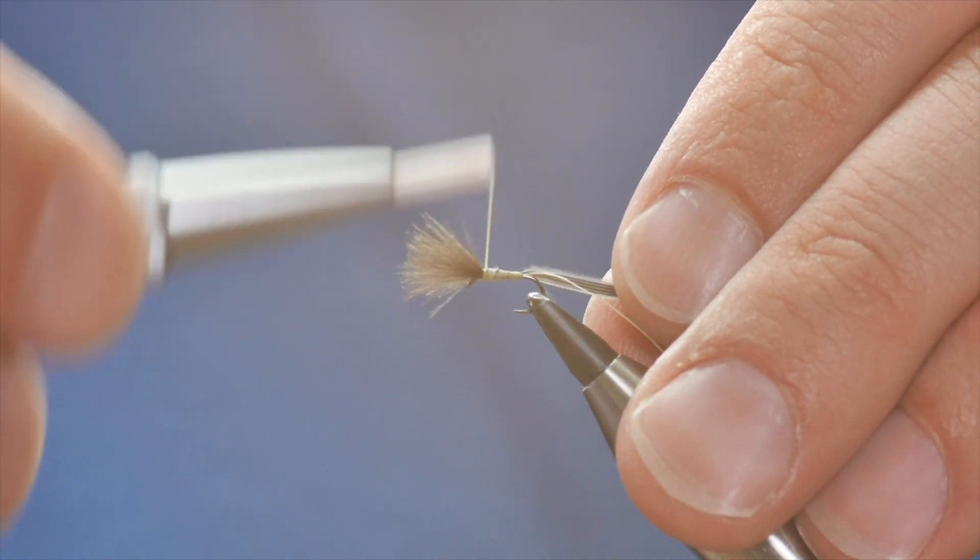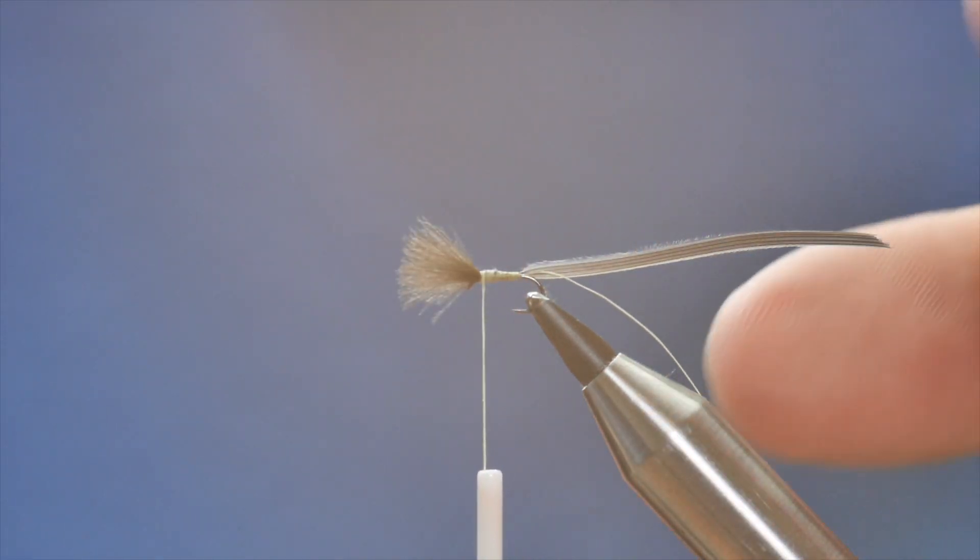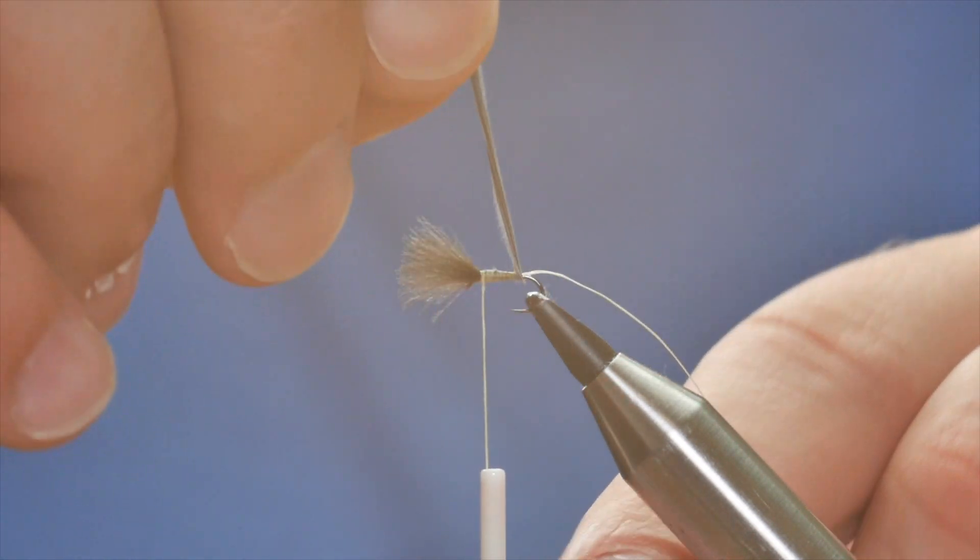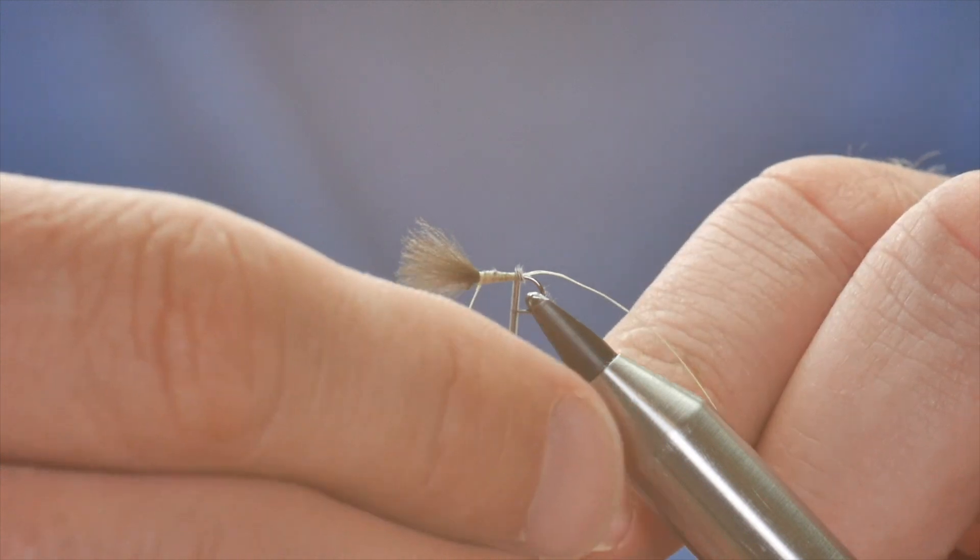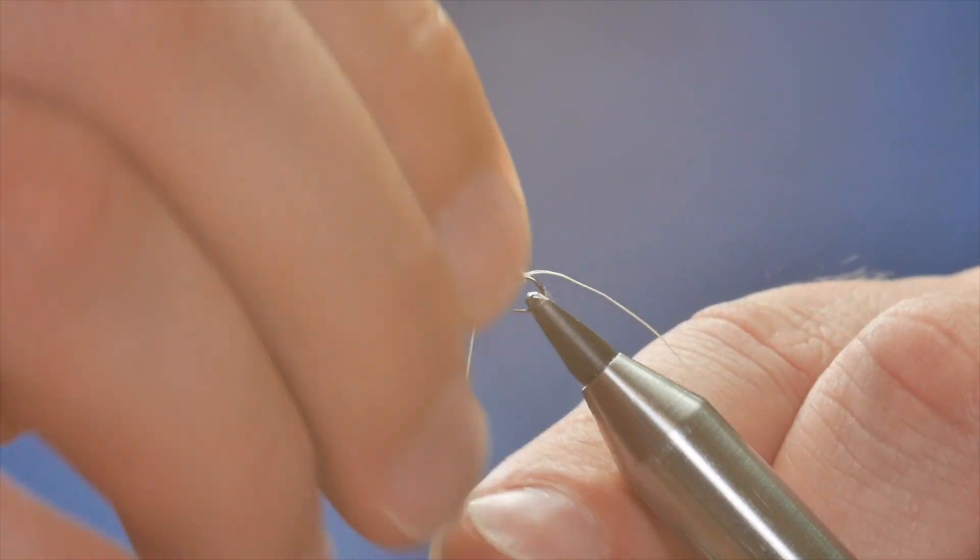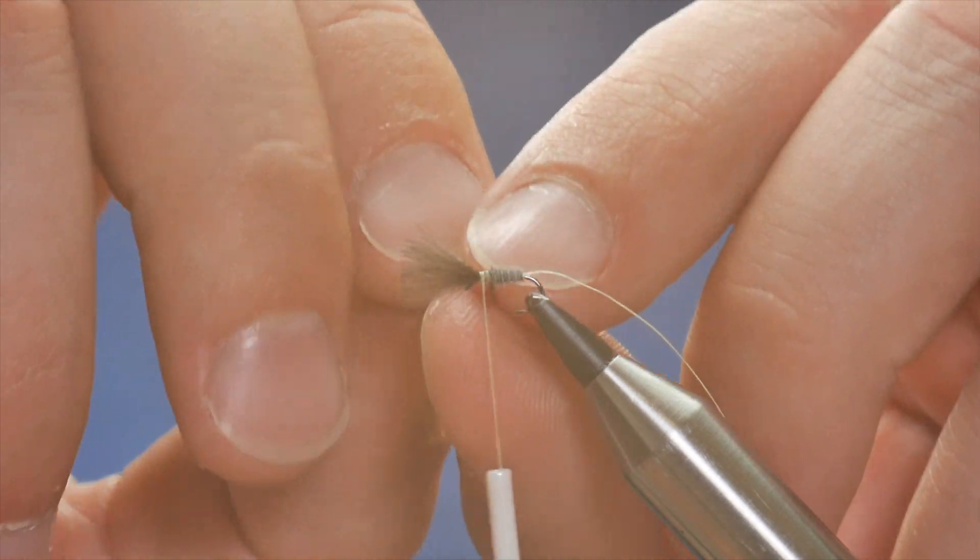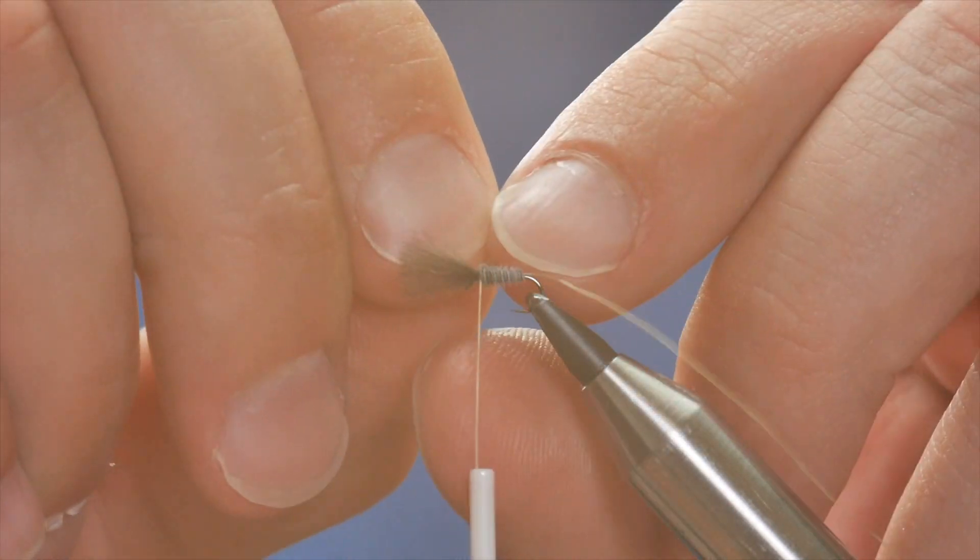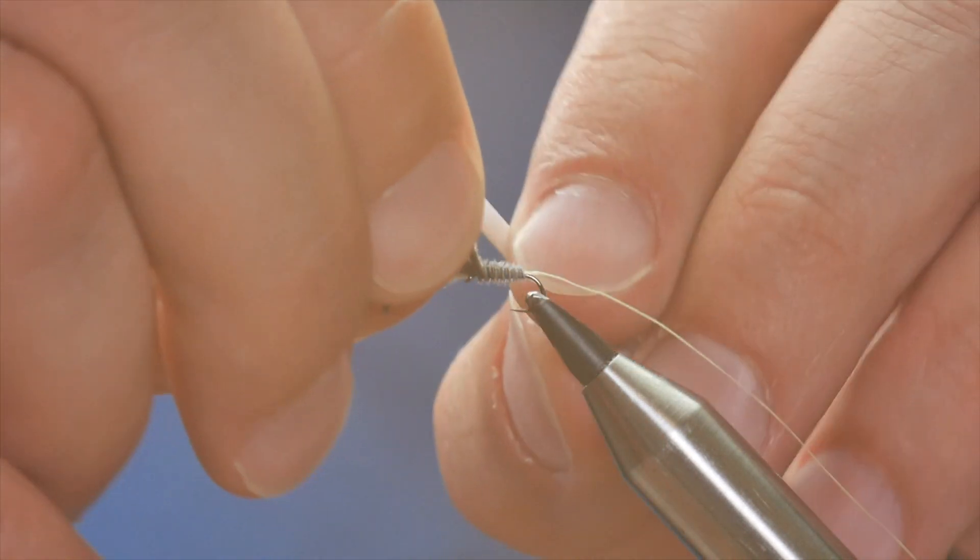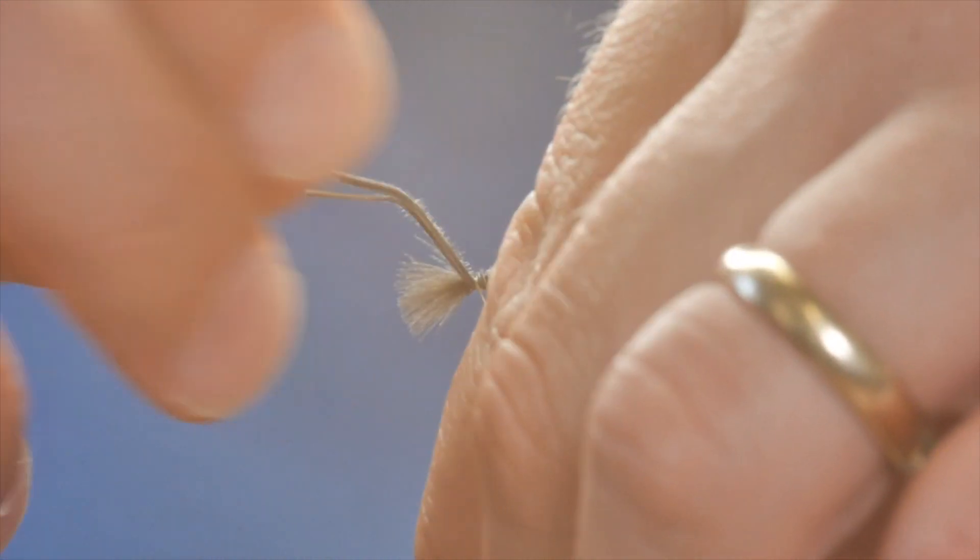Come all the way back up to just where my CDC starts at the head of the fly. Now I'm going to bring the heron fibres towards myself. It's more robust than you would think, the heron. It's fairly easy to work with. And once I've got up to the top here, I'm going to just catch that in.